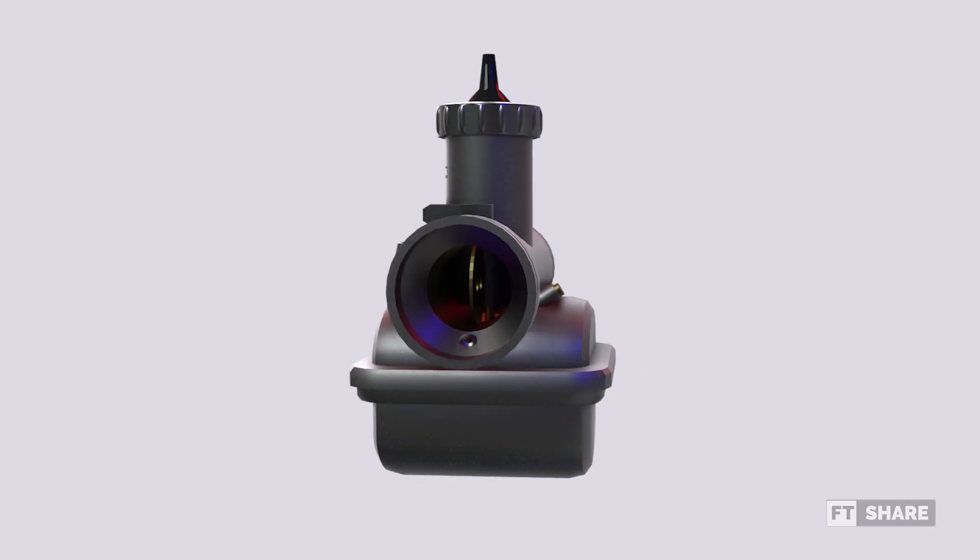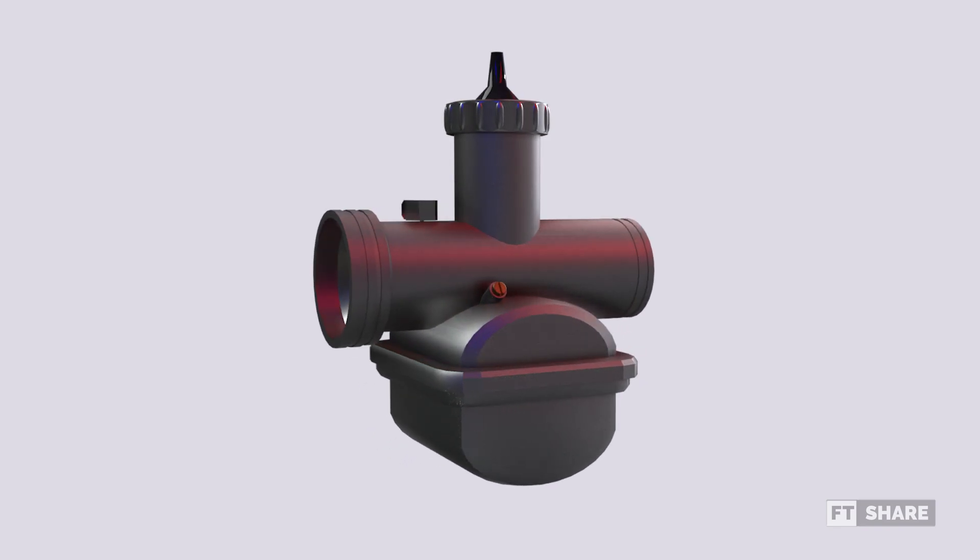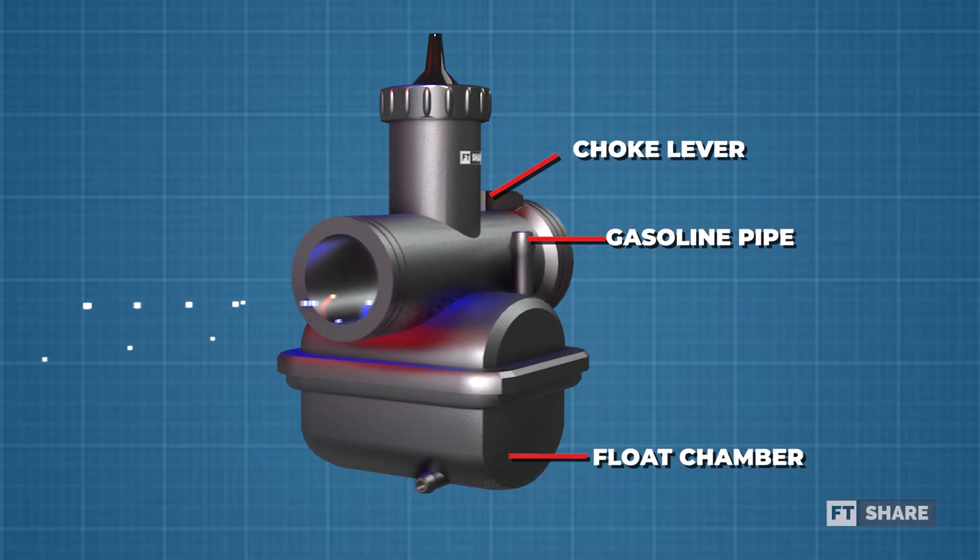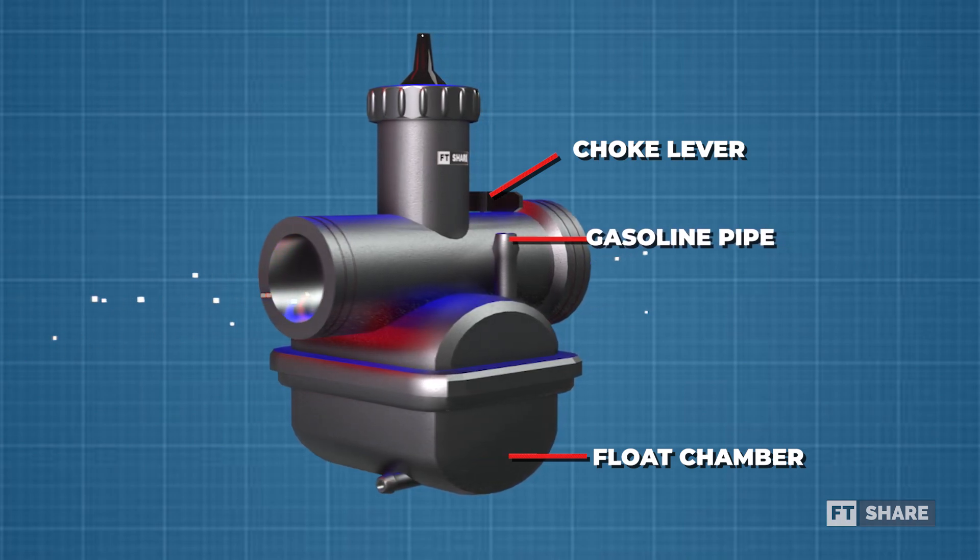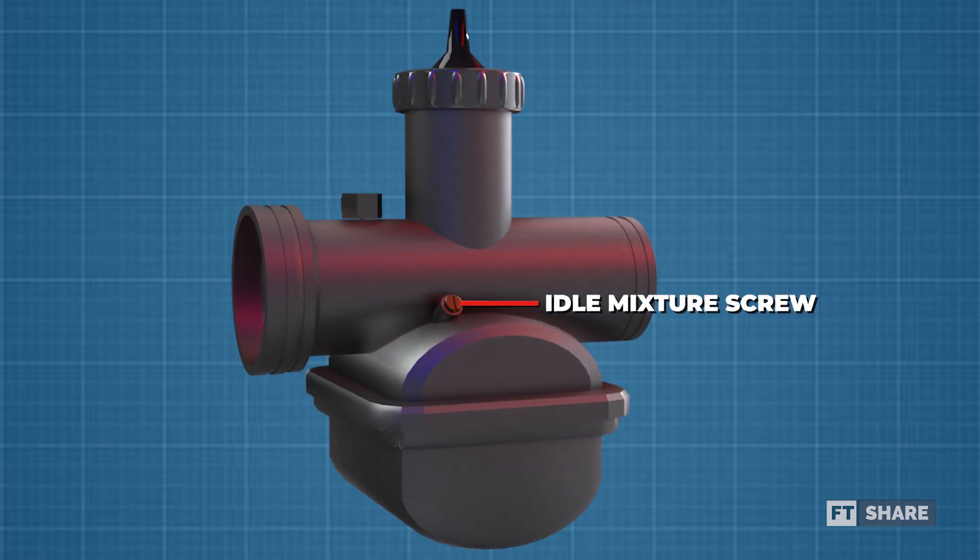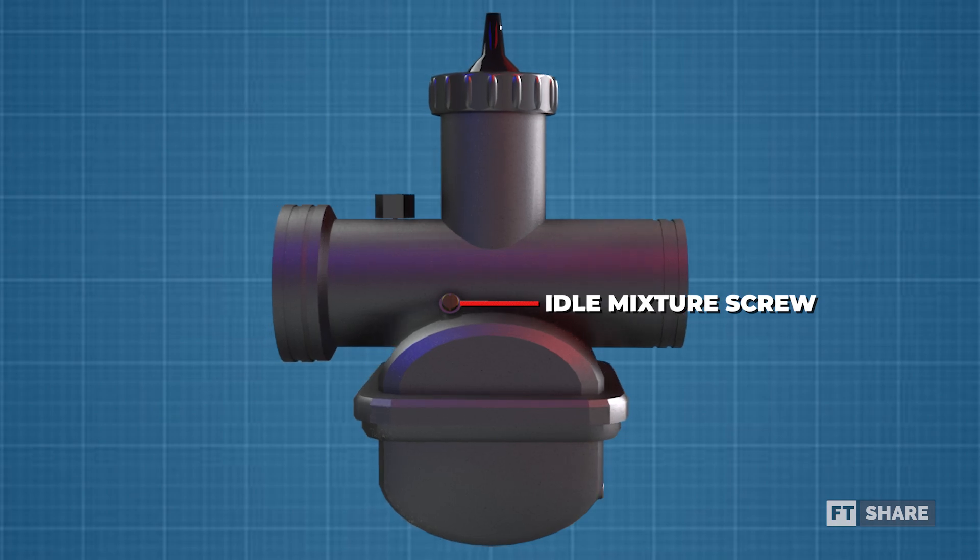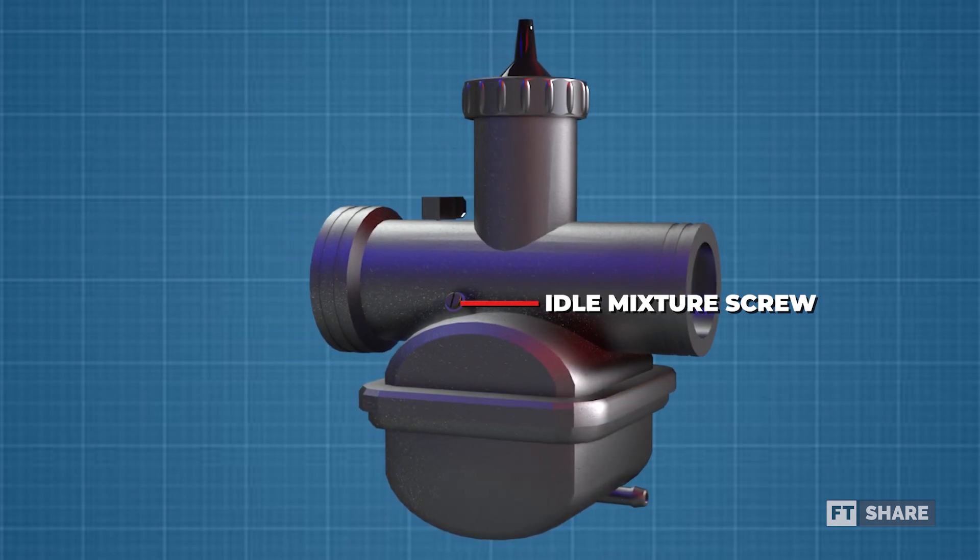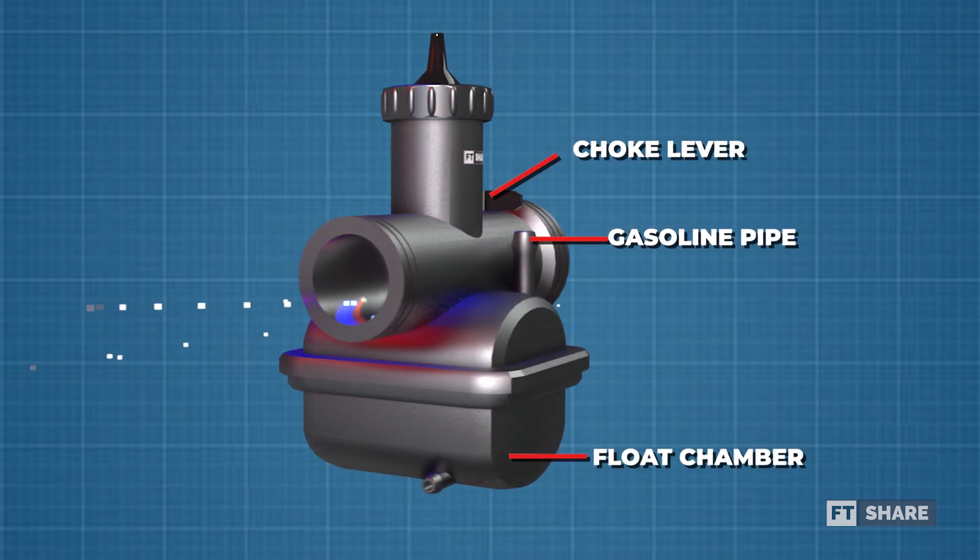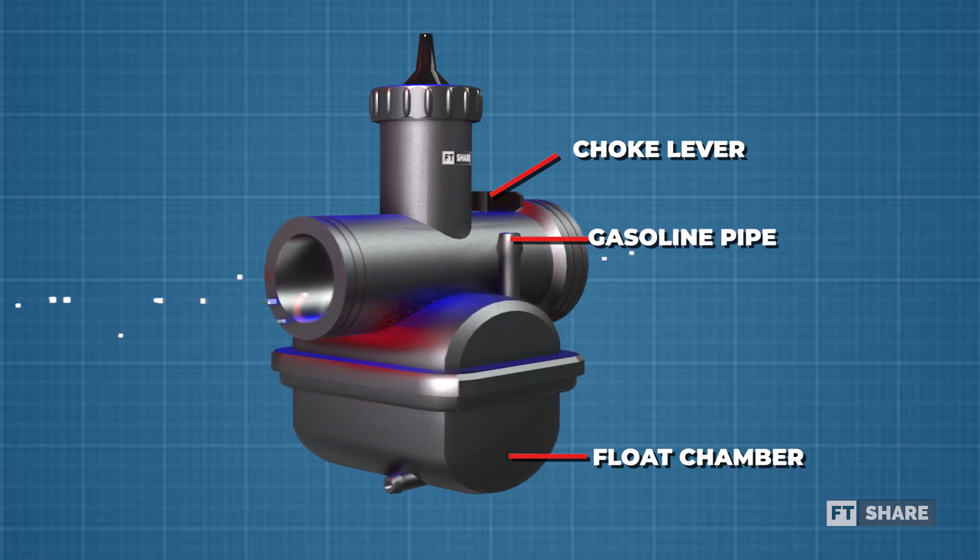Before discussing the working system, it is important to understand the anatomy of the carburetor. From the side, we can see the gasoline pipe or gas intake. Next, we have the idle mixture screw, also known as the idle screw or wind adjustment screw. The third component is the choke lever, and the fourth is the float chamber.